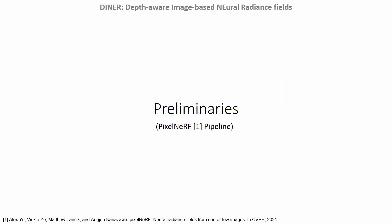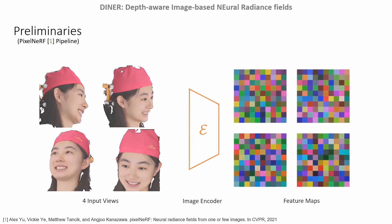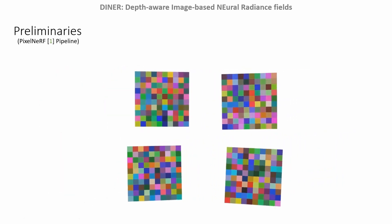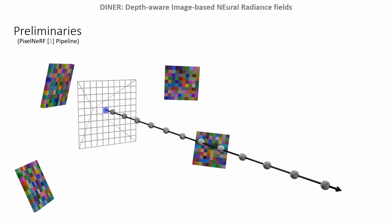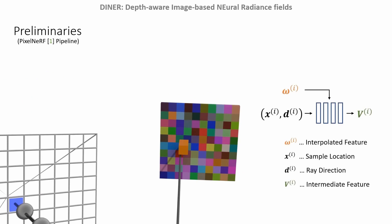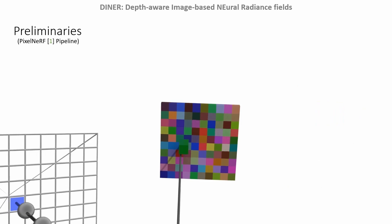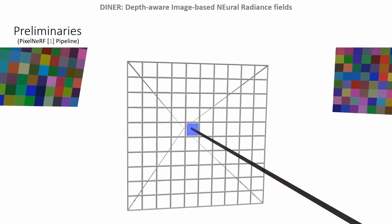DINER builds on top of PixelNeRF, which we briefly review here. The input views are processed with a convolutional encoder to extract feature maps. The resulting feature maps are placed in 3D space. For rendering a target view, rays are cast into the scene along which query points are sampled. The points are projected onto the source camera planes to interpolate a feature vector. The result conditions an MLP, which regresses intermediate feature vectors. The vectors from all views are averaged and a second MLP regresses the color and optical density of the sampling point. Volumetric integration yields the final color.